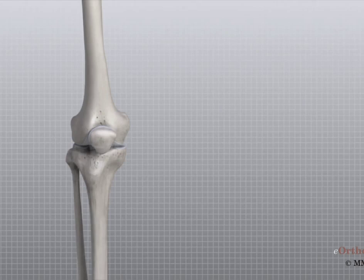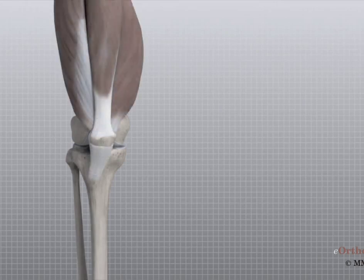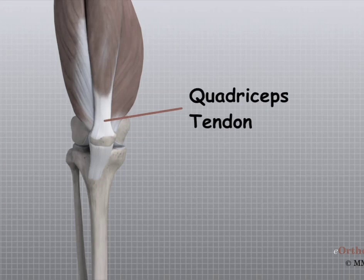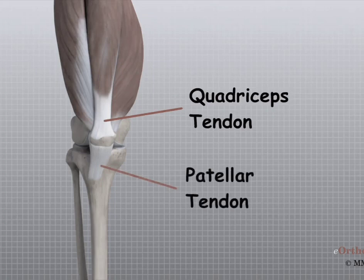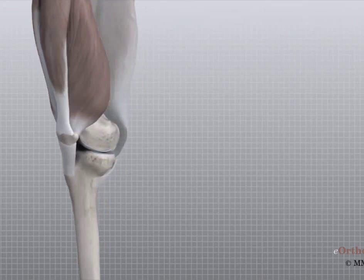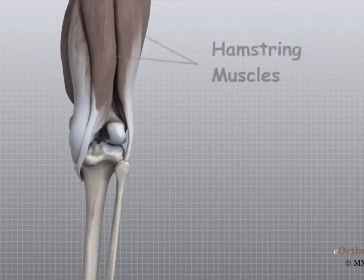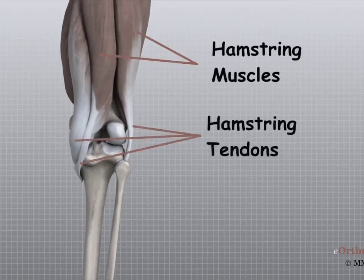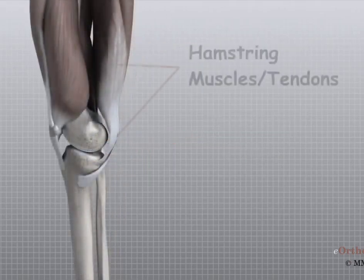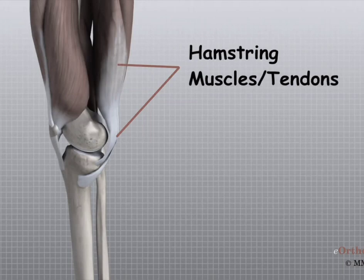Tendons are similar to ligaments, except that tendons attach muscles to bones. The quadriceps tendon connects the large quadriceps muscle of the thigh to the patella. This tendon continues across the patella, or kneecap, and blends into the patellar tendon. The patellar tendon connects the patella to the tibia. The hamstring muscles on the back of the thigh also have tendons that attach in different places around the knee joint, and these tendons are sometimes used as tendon grafts to replace torn ligaments in the knee joint.